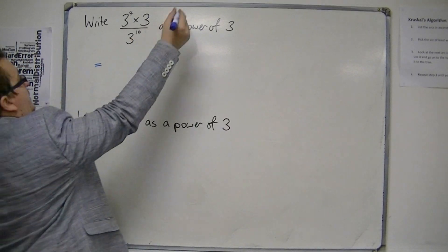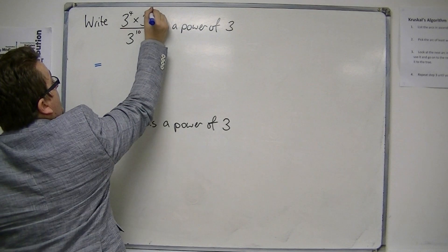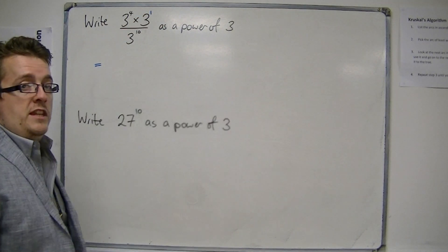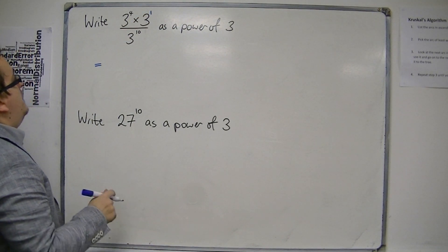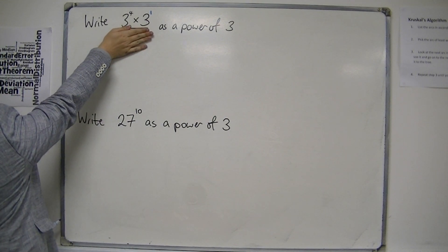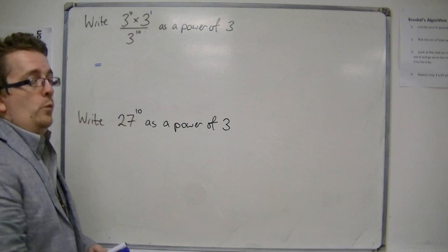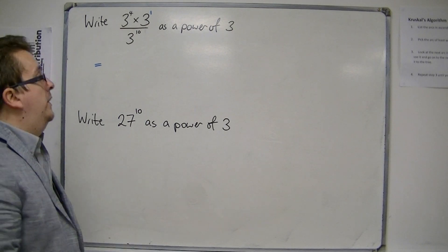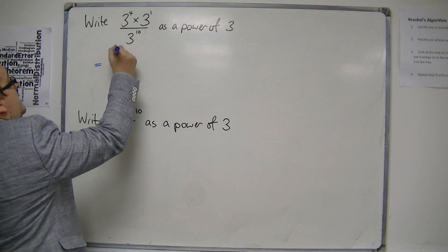Now, first of all, notice that we've got this lone 3 here, and I can write that as 3 to the power of 1. Now just look at the top half of the fraction. 3 to the 4 times 3 to the 1. We can use one of our rules to say that that's 3 to the power of 5.